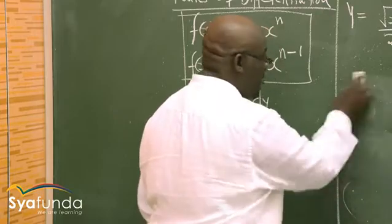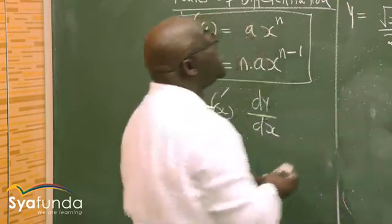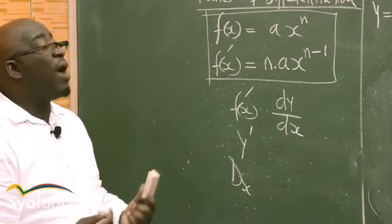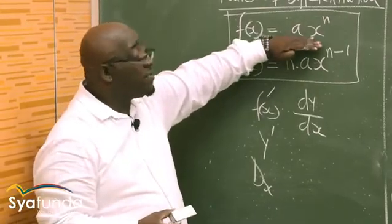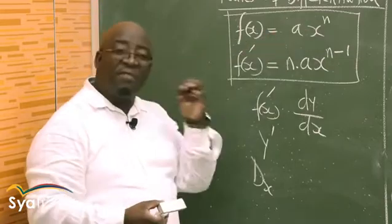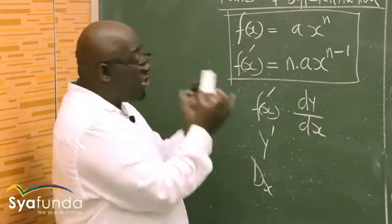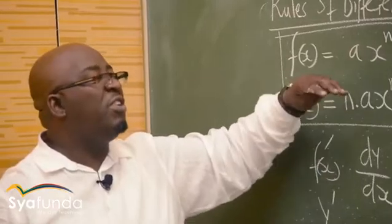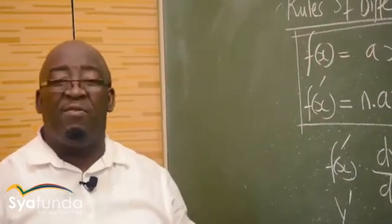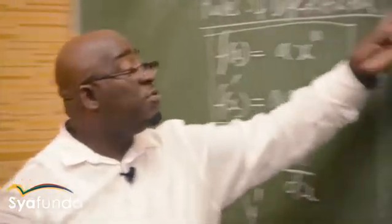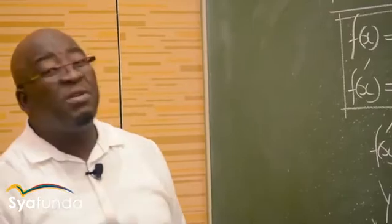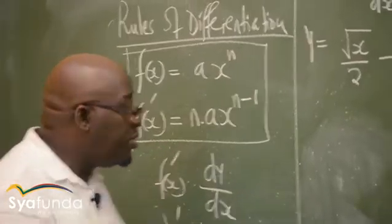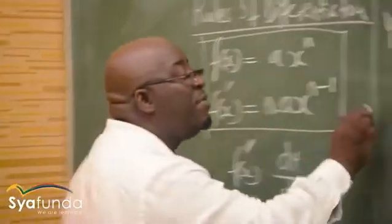Let's look at the first problem — from November 2008, Question 8.2: find dy/dx. Before differentiating, the expression must be in the form ax^n. It is safer to rewrite each term first. You cannot differentiate until you can clearly identify a, x, and n in every term.